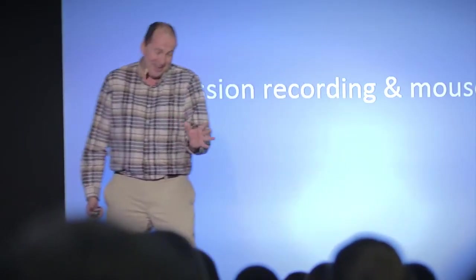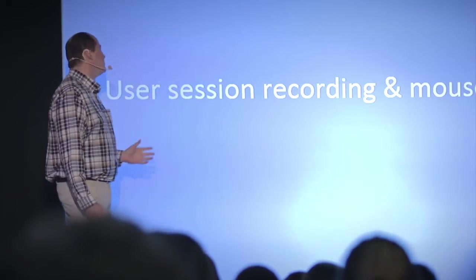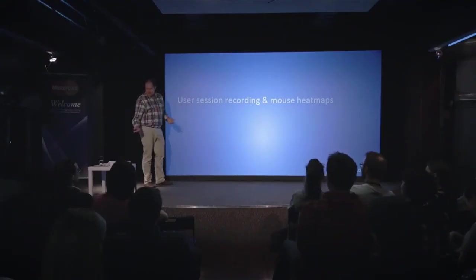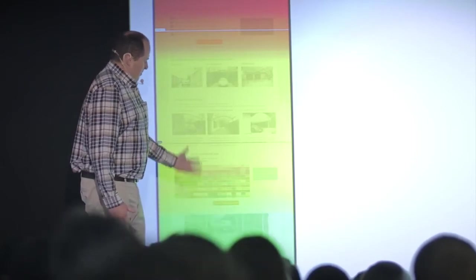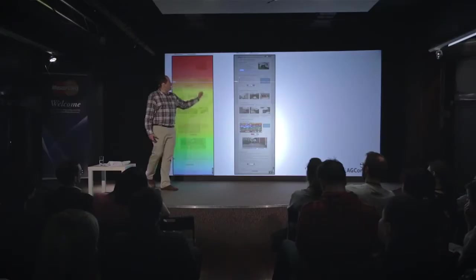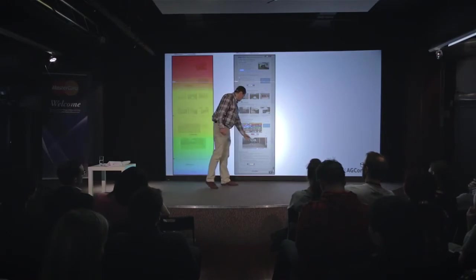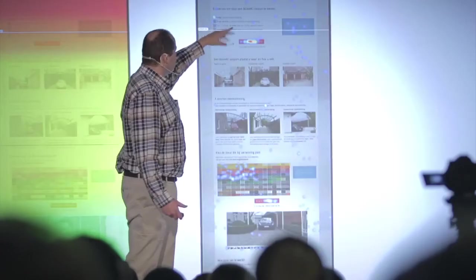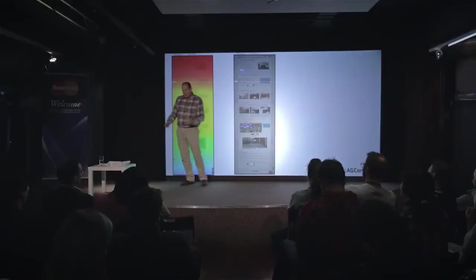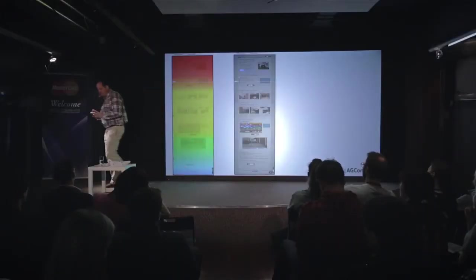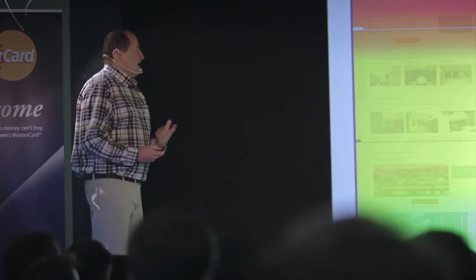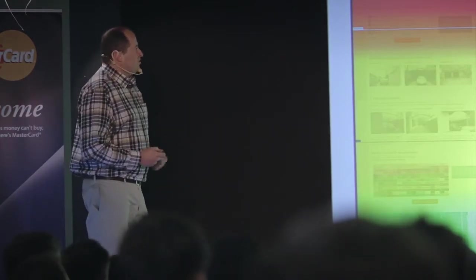I love session recording software and mouse heat maps — these samples are taken from Hotjar. Red areas show where everyone is looking; the colder it gets, the fewer people look. In this case, 50% of the people made it to the end of the page. These are click heat maps — most people click on the call to actions, which is good, but some people are clicking on things I don't want them to click on. This kind of tool gives you very good insight into what users do, and I like it more than digging into Google Analytics.